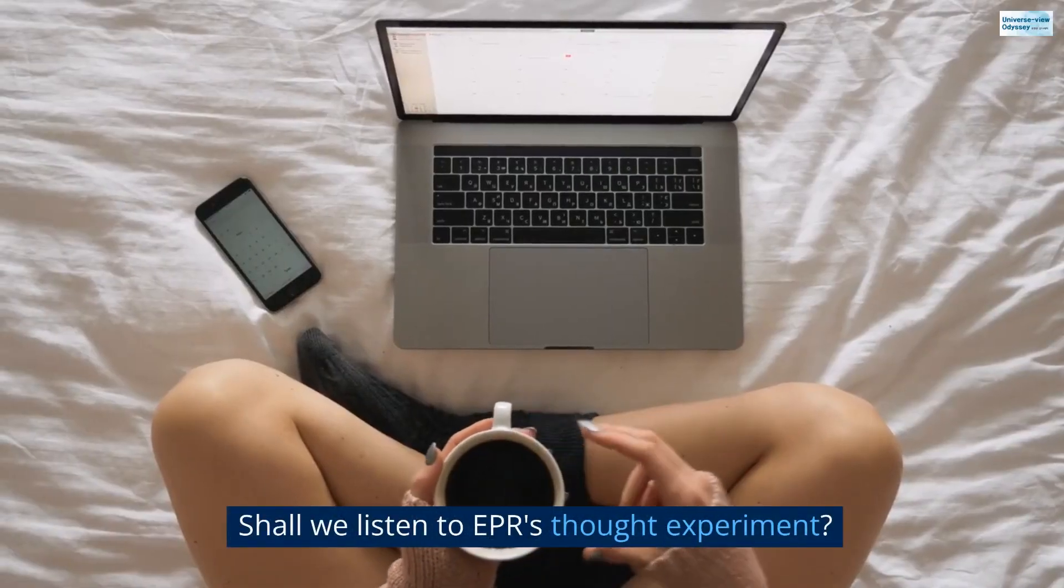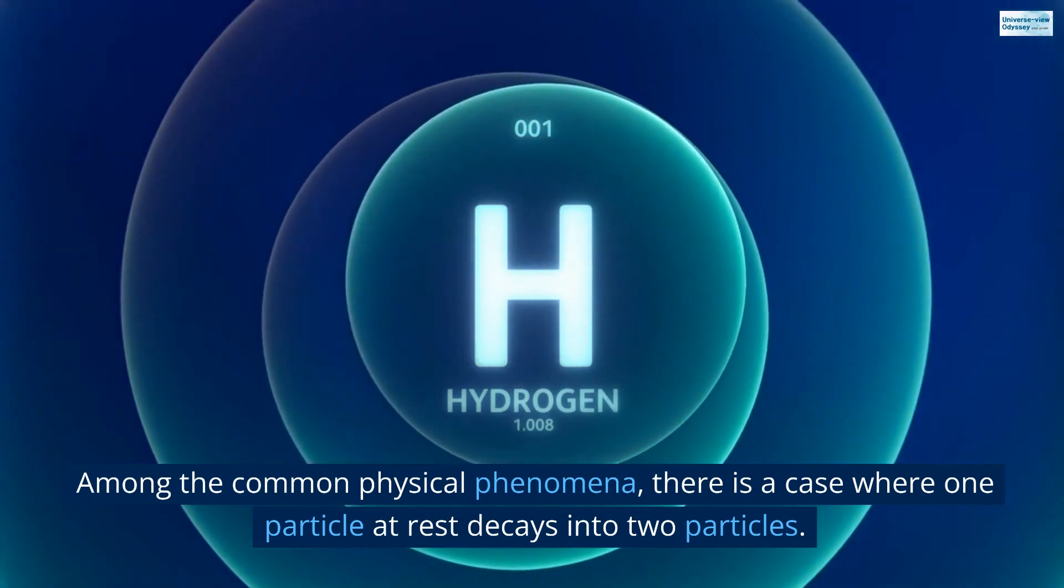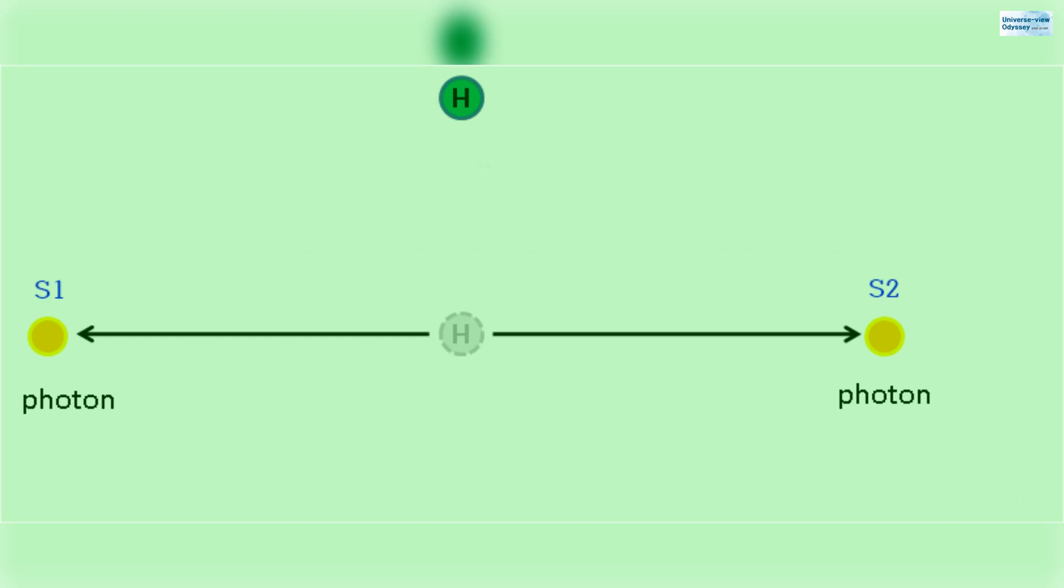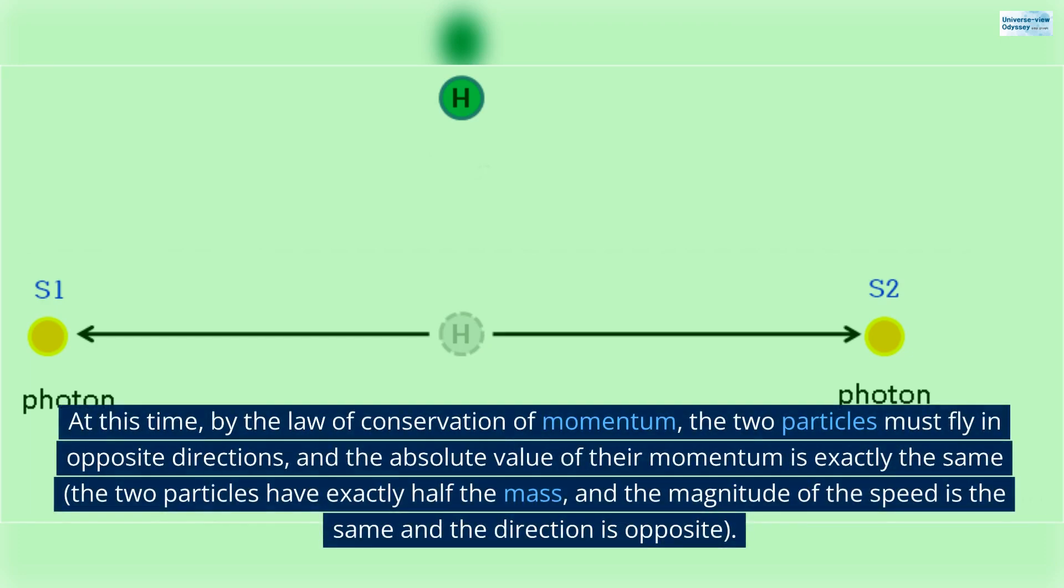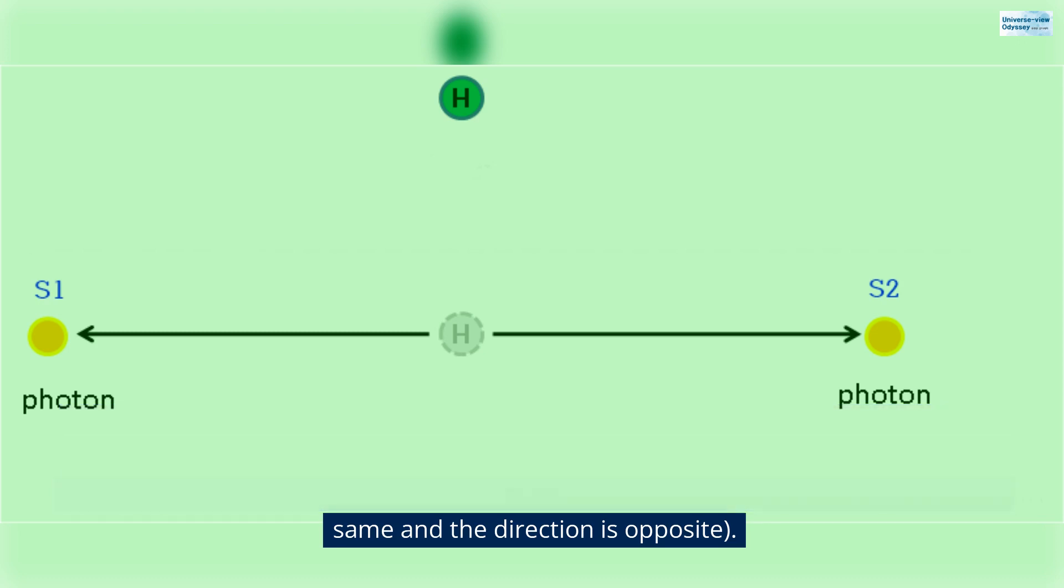Shall we listen to EPR's thought experiment? Among the common physical phenomena, there is a case where one particle at rest decays into two particles. At this time, by the law of conservation of momentum, the two particles must fly in opposite directions, and the absolute value of their momentum is exactly the same. The two particles have exactly half the mass, and the magnitude of the speed is the same and the direction is opposite.